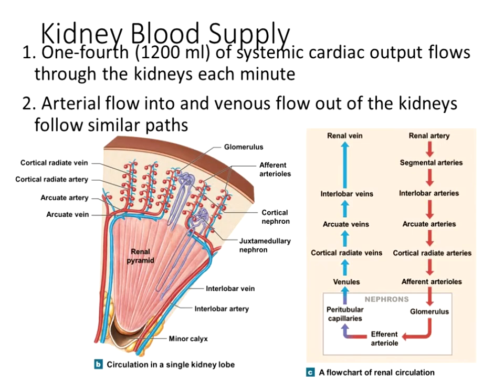The kidneys typically receive about a quarter of cardiac output at rest. During exercise, blood is redistributed more toward skeletal muscles and less toward the GI tract and kidneys. At rest, with cardiac output of about five liters per minute, a quarter — roughly 1,200 to 1,250 milliliters — goes to both kidneys combined, so about 600 milliliters per kidney. That blood enters on the renal artery.